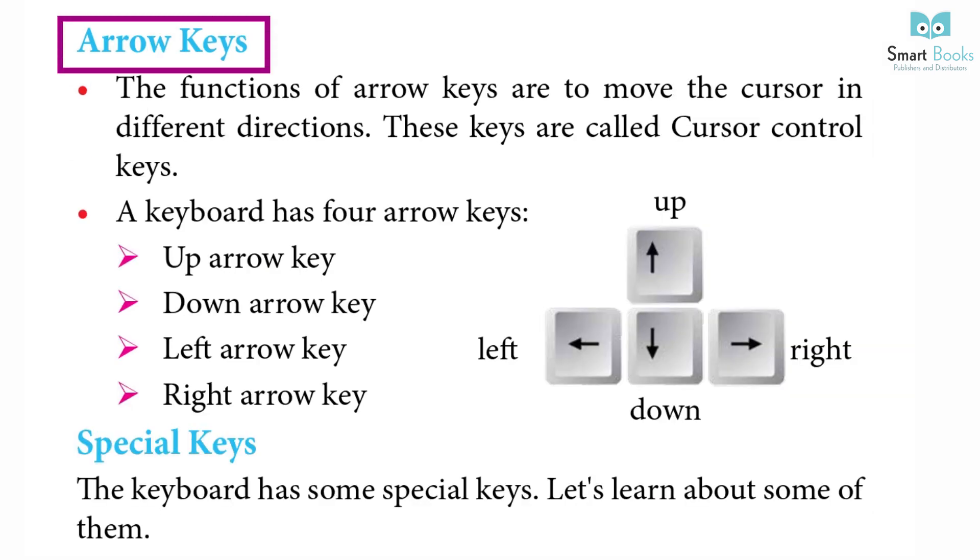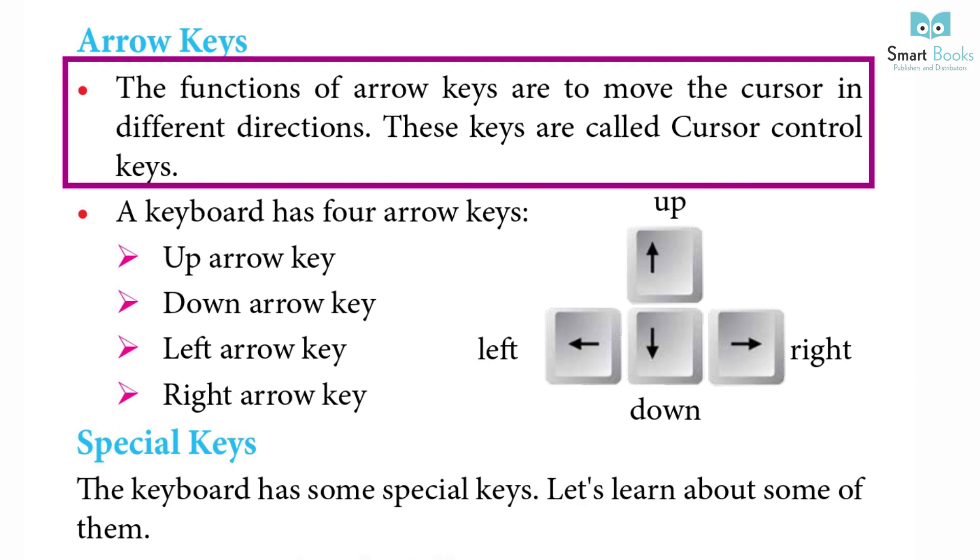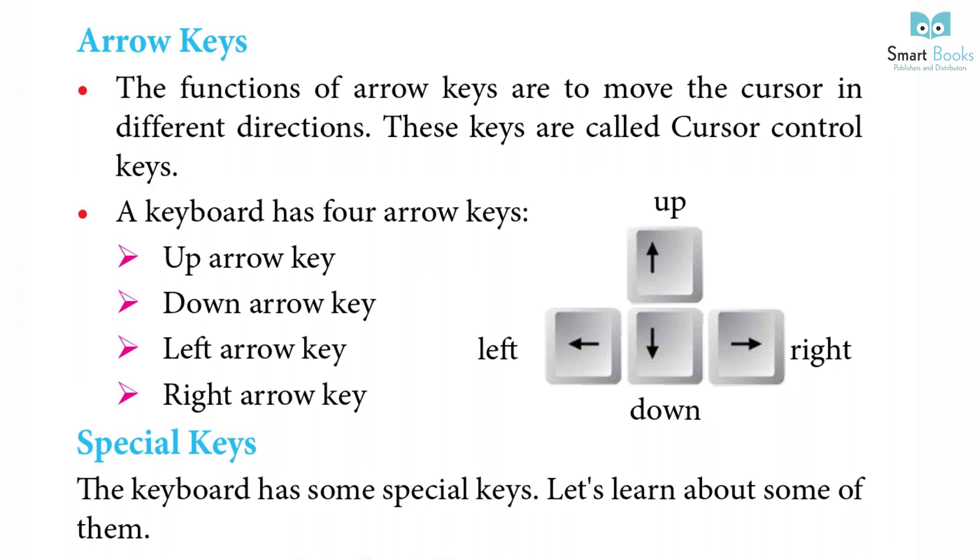Arrow keys: The functions of arrow keys are to move the cursor in different directions. These keys are called cursor control keys. A keyboard has 4 arrow keys: Up arrow key, Down arrow key, Left arrow key, Right arrow key.